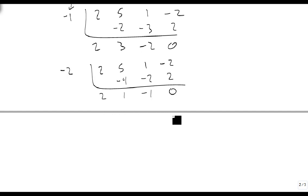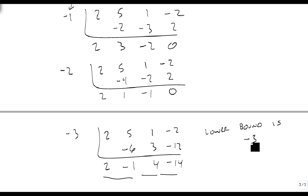And minus 3, 2, 5, 1, minus 2. 2 minus 6 is minus 1, 3 is 4, that's minus 12, minus 14. Notice we alternate signs every time, so the lower bound is minus 3.